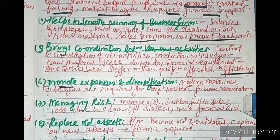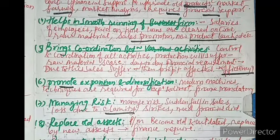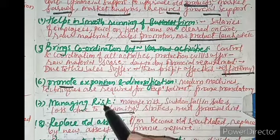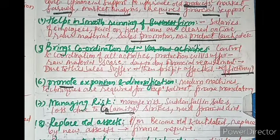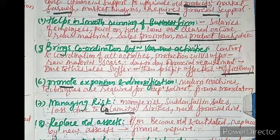Seventh point: managing risk. A company has to manage several risks — like a sudden fall in sales, or loss due to natural calamity such as an earthquake, famine, or strike. Financial aid is required in these situations. Corporate finance helps manage such risks.